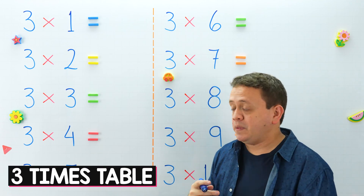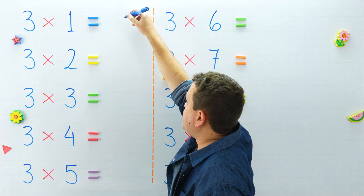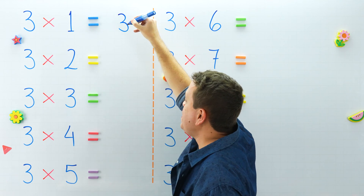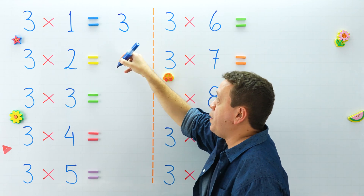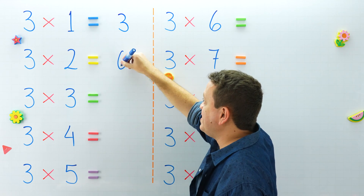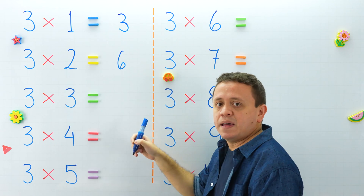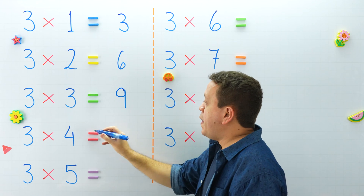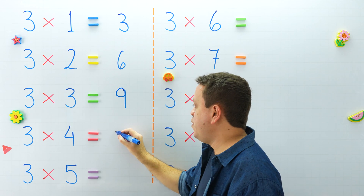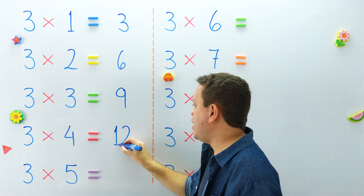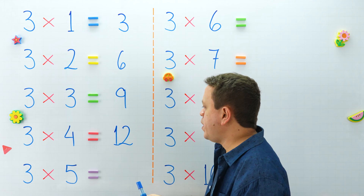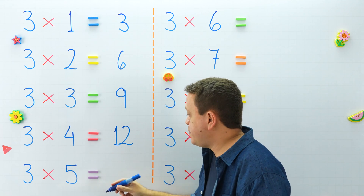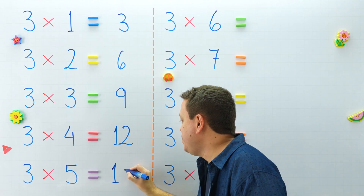And now, the 3 times table. Let's start with 3 times 1. 3 times 1 equals 3. And 3 times 2 equals 6. 3 times 3 equals 9. And 3 times 4 equals 12. What about 3 times 5? 3 times 5 is equal to 15.